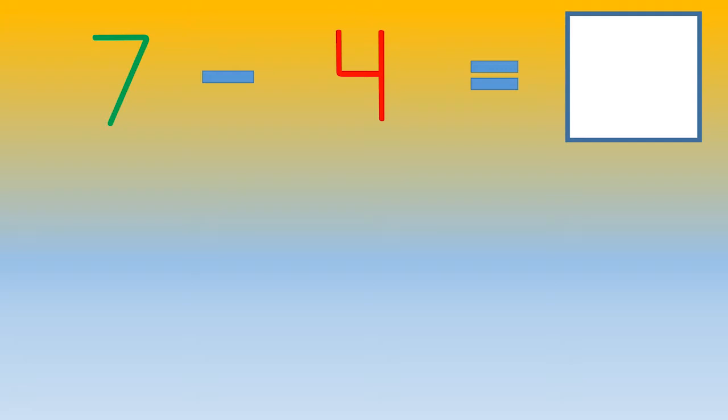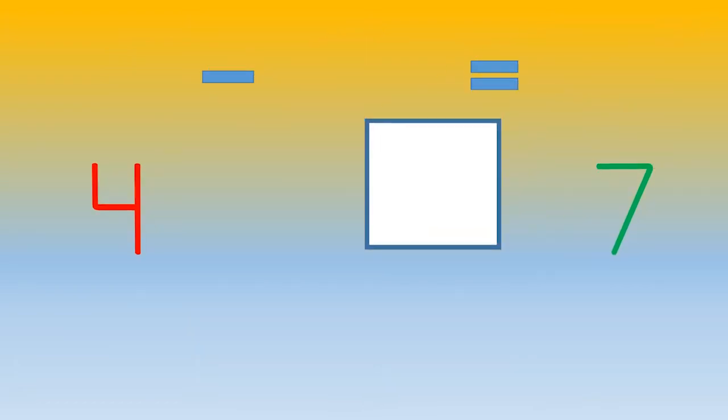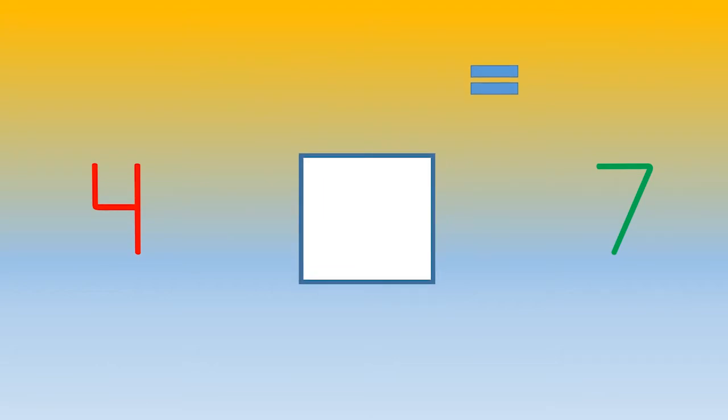You can use counting on to subtract by putting the numbers in a different order and changing it into an addition problem with a missing number.